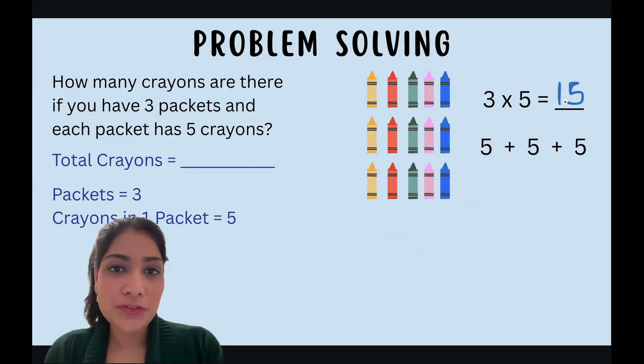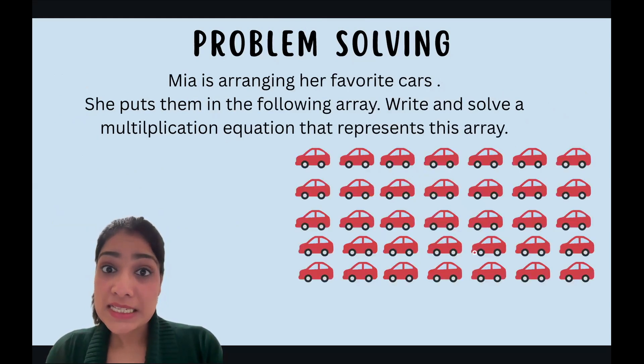But when you are solving it, it would be difficult to draw crayons, so you can simply use dots or any symbols that you like. Something like this also represents the same array. Let's solve our next problem. Mia is arranging her favorite cars. She puts them in the following array. Write and solve a multiplication equation that represents this array. Do you want to pause and try it yourself?